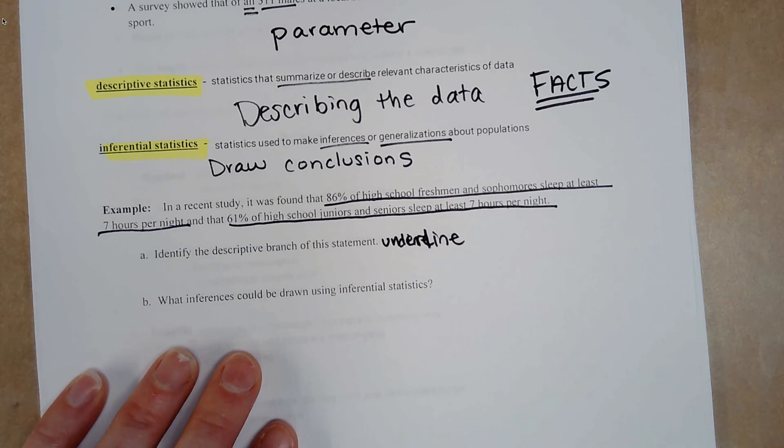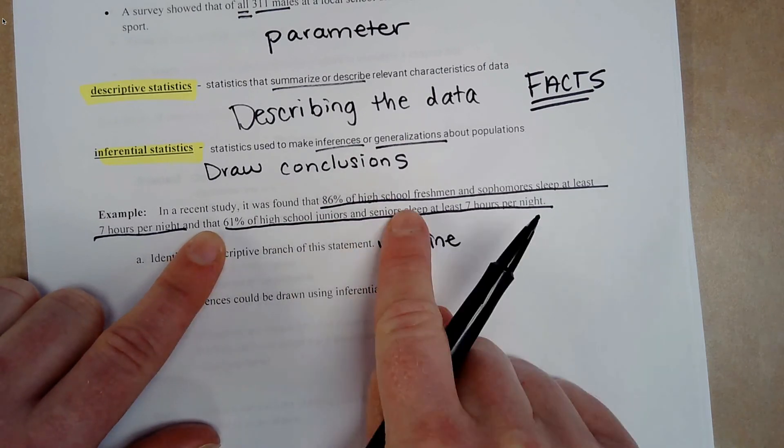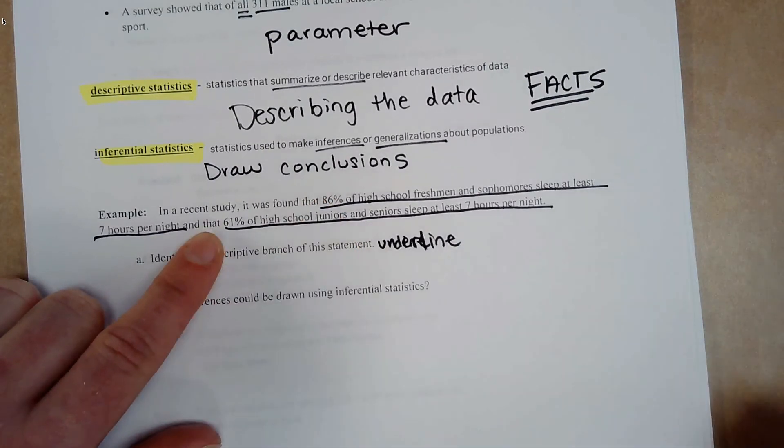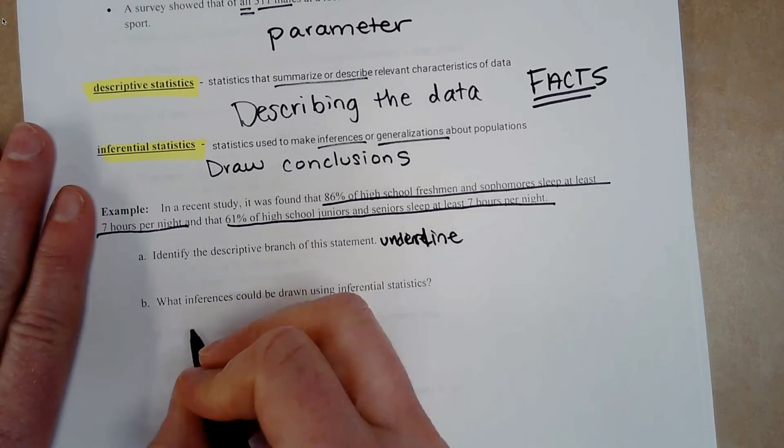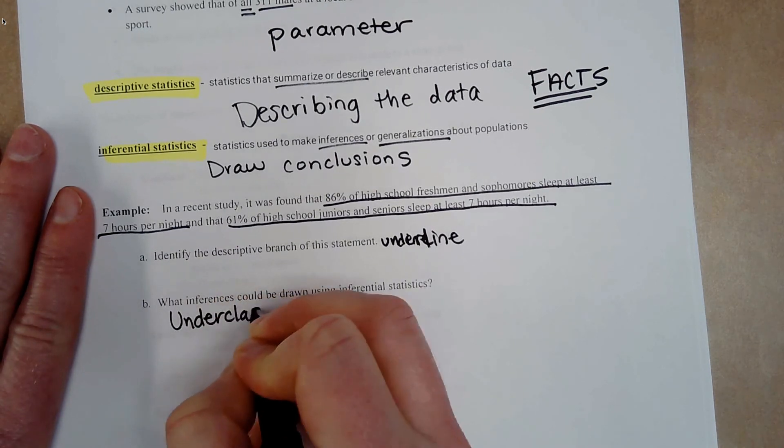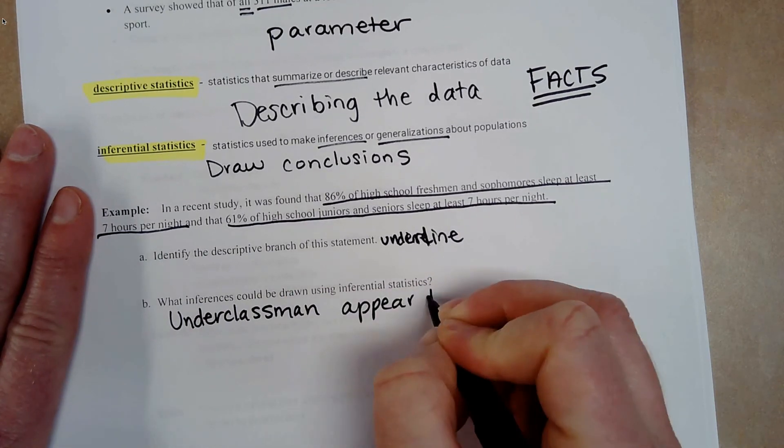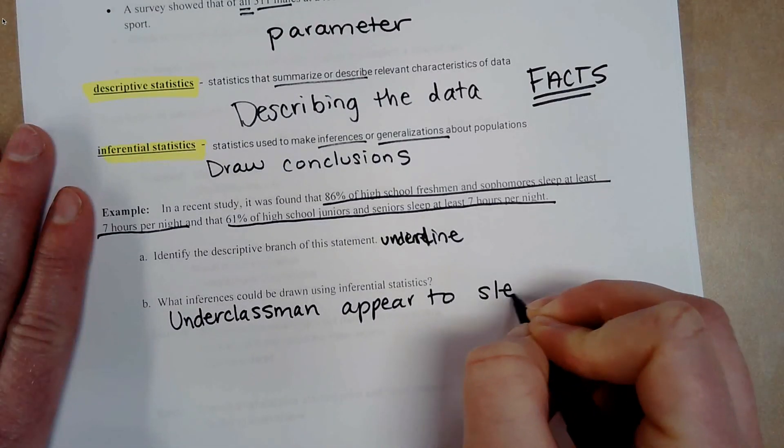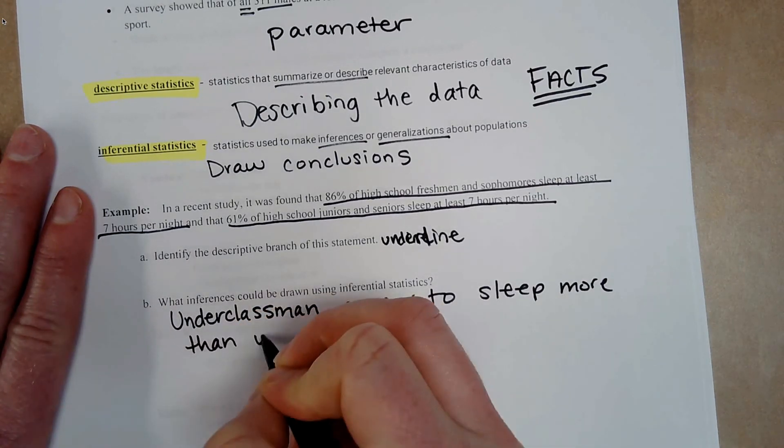What inferences could be drawn using inferential statistics? So if you look at the numbers and you compare them, I would say juniors and seniors sleep less than freshmen and sophomores. Or we could say the opposite. Let's call them underclassmen and upperclassmen. Underclassmen appear to sleep more than upperclassmen.